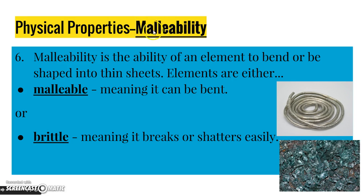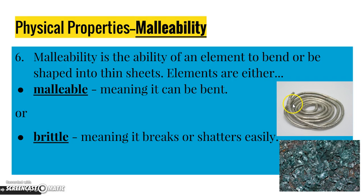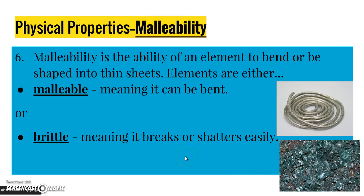Malleability is a new one. Malleability is the ability of an element to bend or be shaped into thin sheets. Elements are either malleable — meaning they can be bent, like this wire right here — or brittle, meaning they break or shatter easily, kind of like this glass right here. If something breaks or shatters, it's brittle; if it can be bent or shaped, it's malleable. That's number six on your paper.